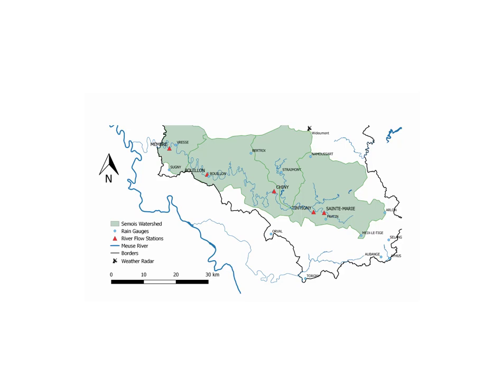In the system identification laboratory associated to this course, you will identify models that can be used for flood prediction. The input will be the rainfall as measured by rain gauges, and the output will be the river flow measured at river flow stations. You can then use the identified models to construct a prediction of the river flow in the future.